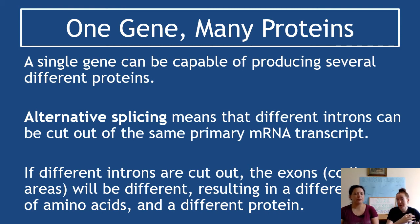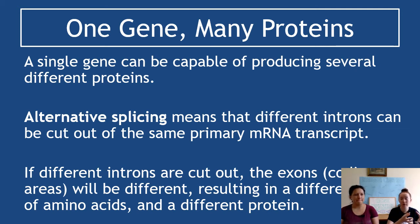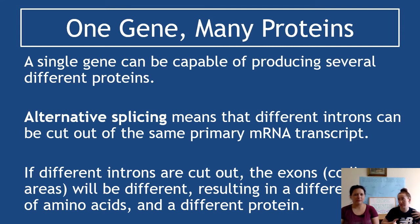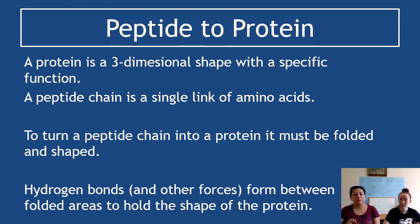One gene can produce many different proteins through a process called alternative splicing. In the last video we covered introns and exons; alternative splicing means different introns are cut out of the same primary mRNA transcript, leaving different exons in, which codes for different amino acids and therefore different proteins. One single gene can make many proteins depending on how the splicing occurs. There's a diagram in the Sway that makes this very clear.